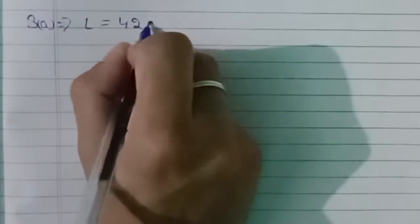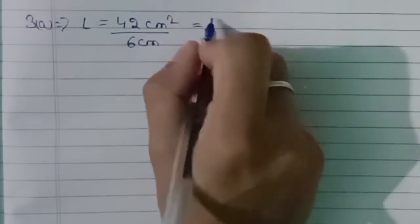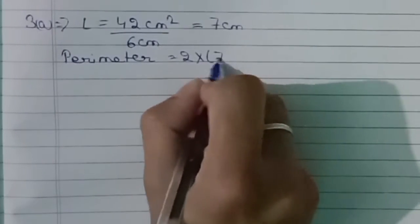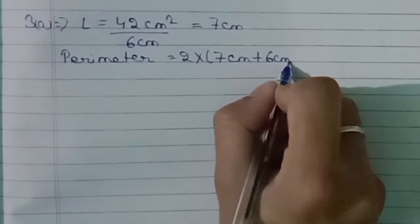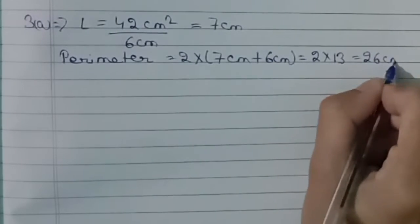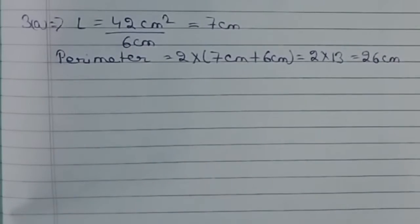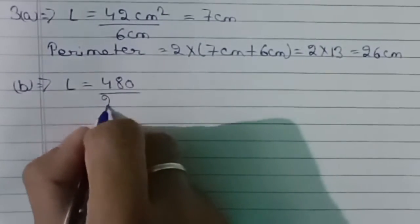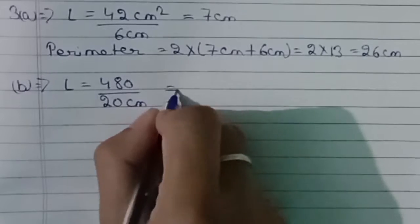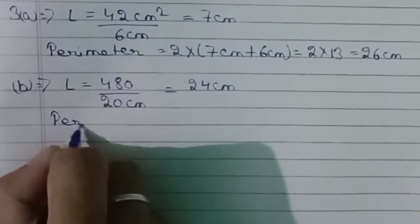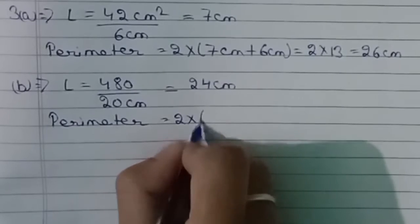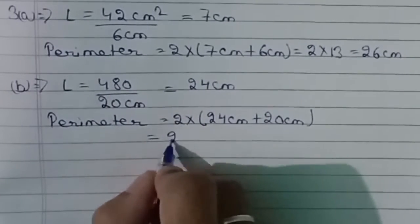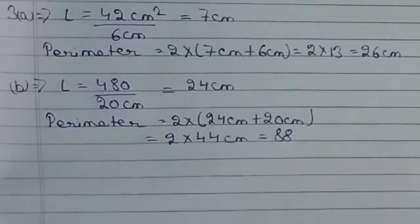Length = area ÷ breadth. For part A: 42 ÷ 6 = 7 cm. Perimeter = 2 × (7 + 6) = 2 × 13 = 26 cm. For part B: 480 ÷ 20 = 24 cm. Perimeter = 2 × (24 + 20) = 2 × 44 = 88 cm.